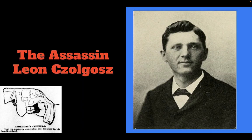Leon Czolgosz was a Polish-American worker who grew up in and was born in Detroit, Michigan. He became a fan of anarchism after seeing how laboring conditions radicalized him, as many were radicalized in the late 19th century. He attended speeches by Emma Goldman, the anarchist writer and speaker in the United States, and often remarked that the socialist movement in America was quite disappointing. When he attended anarchist meetings, he was often thought of as a faker or a fed, as they said he didn't really believe it.